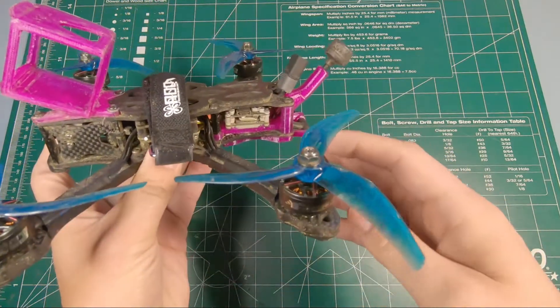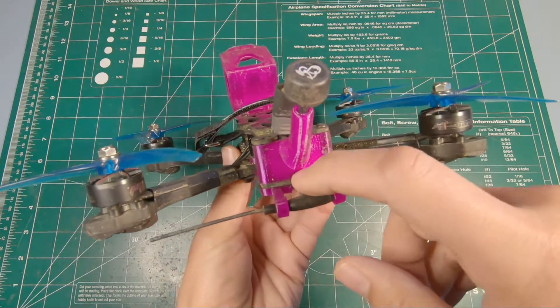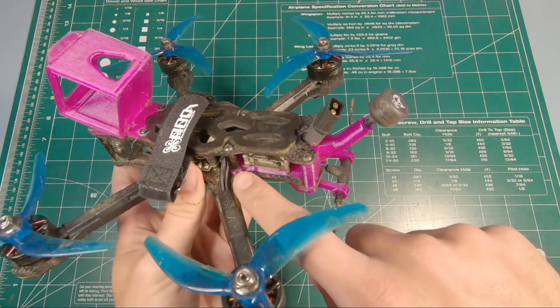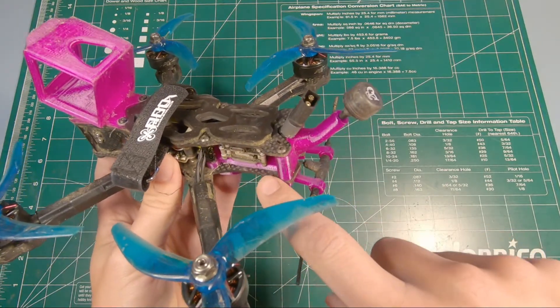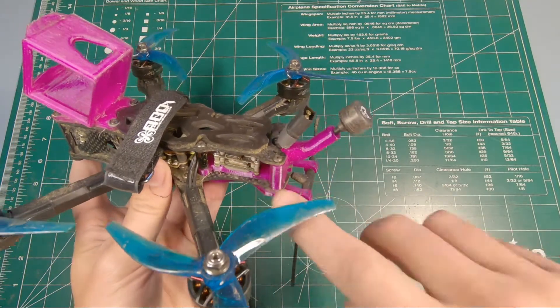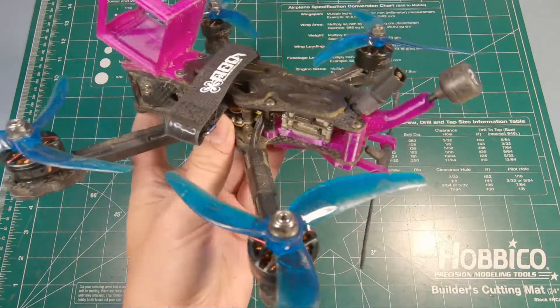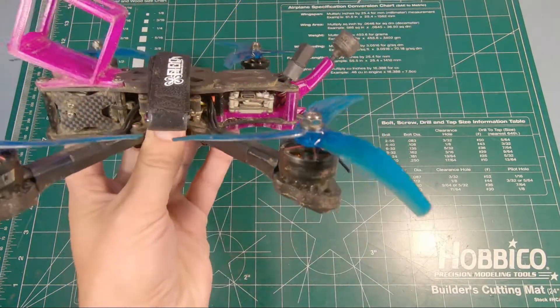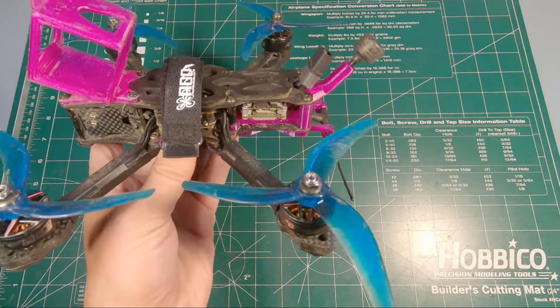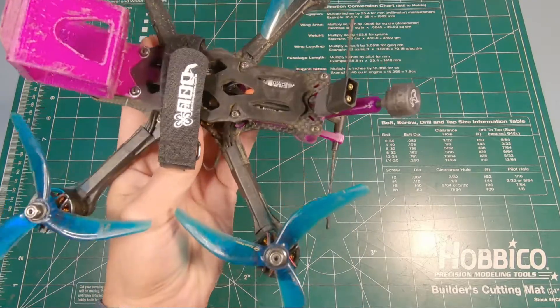Something else this has which is really nice is it actually has a channel underneath it, so you can actually route all your wires from your flight controller up to the back and they're completely hidden away. Like, they're just not exposed at all. There's no way they can get snagged or damaged on anything, so that's really nice.